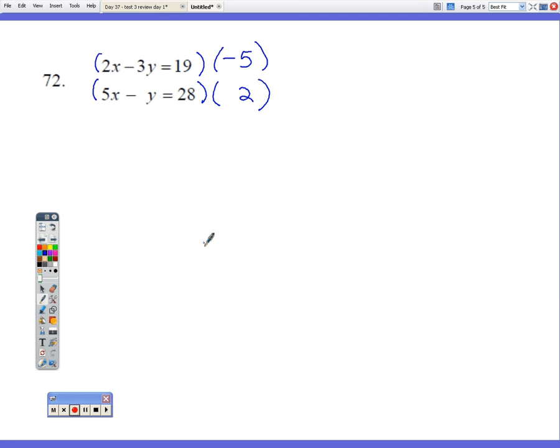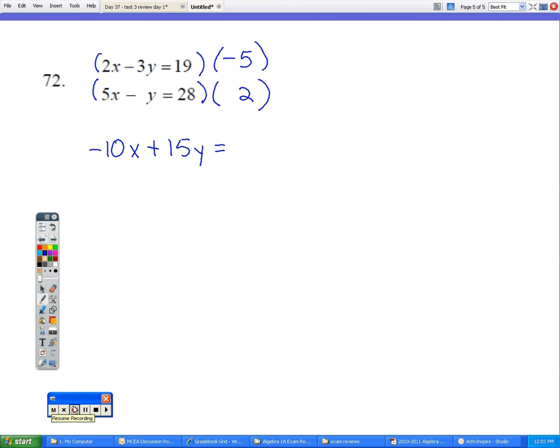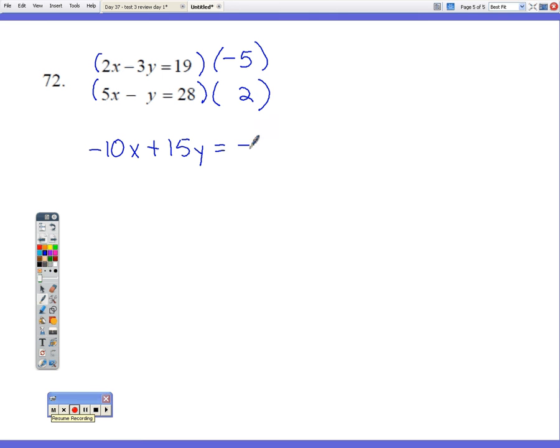So when I distribute the 5 to the first equation, I get negative 10x plus 15y equals negative 95. Now 2 times the second equation gives us 10x minus 2y equals 56.